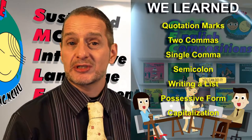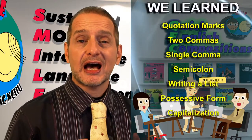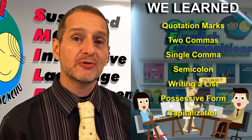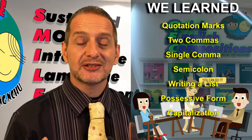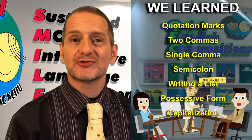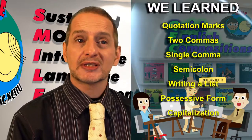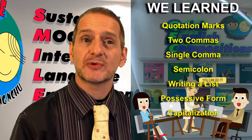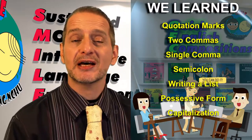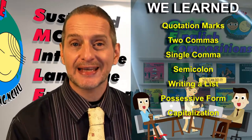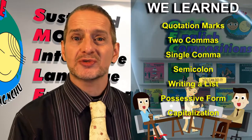In this part we looked at quotation marks, we looked at commas — the serial comma and the two commas around the non-restrictive adjective clause — we looked at semicolons, writing a list, the possessive form of the apostrophe, and capitalization. Lots of rules.